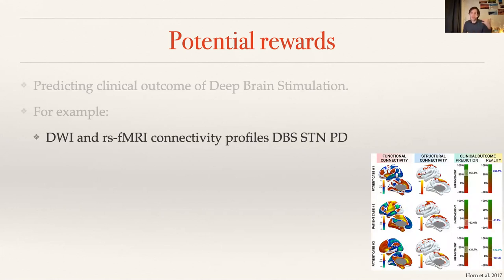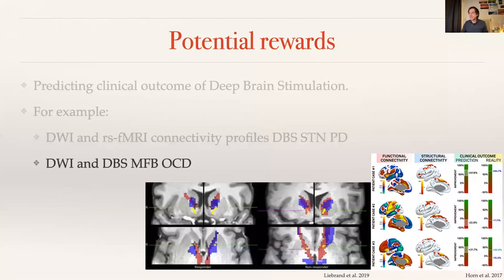An interesting thing he shows is the combination of diffusion weighted data and resting state, and he shows that independently they can actually predict clinical outcome — which links back to the structure-function relationship. As a related example, recent work from the Amsterdam Medical Center looked at electrode placement relative to the medial forebrain bundle in OCD patients, and you can basically predict whether someone will be a responder or non-responder depending on where you are relative to the white matter bundle.